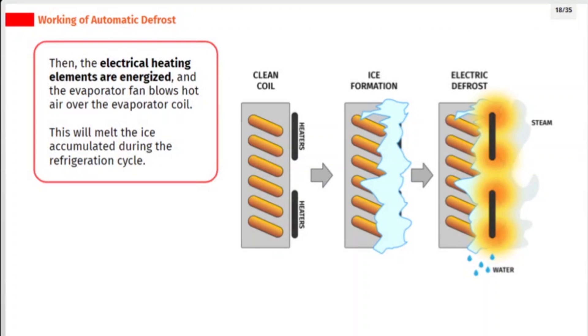Then, the electrical heating elements are energized, and the evaporator fan blows hot air over the evaporator coil. This will melt the ice accumulated during the refrigeration cycle.